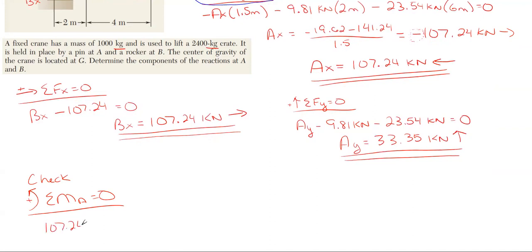What we have here is 107.24 for B times the 1.5, it is rotating counterclockwise so it's positive, and then the remaining two are rotating clockwise so they are negative based upon my sign convention. And these all pop out to be exactly zero in my moment equation about point A, so I know that my reactions are correct.